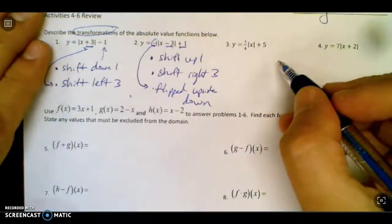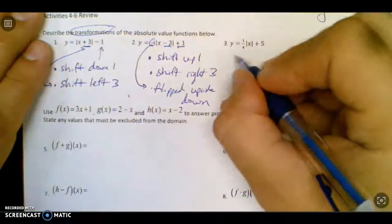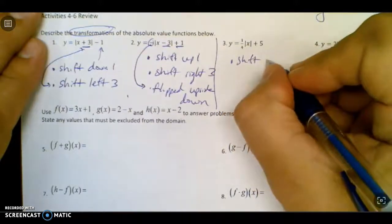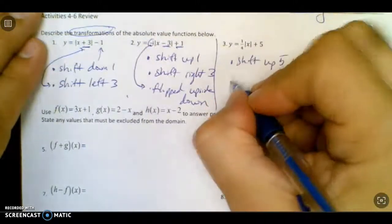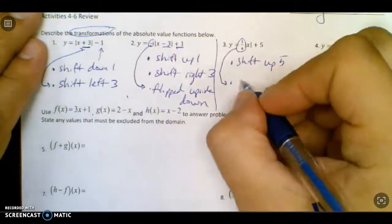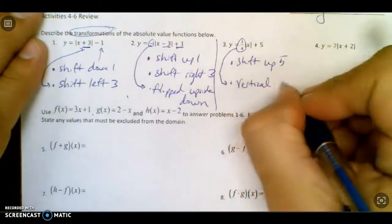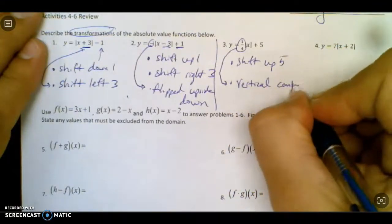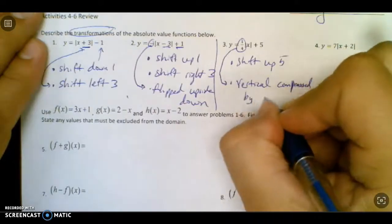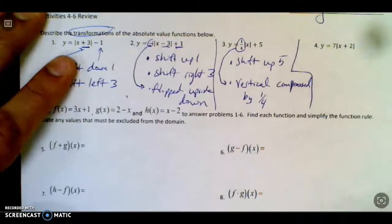And then similarly on the other ones, kind of the same deal going on. This 5 would be a shift up 5. And now we've got a little different thing, a 1/4 in front. It doesn't flip it upside down or anything, but it does affect the y values. It is a vertical compression by 1/4, which means every y value will be 1/4 as high as it used to be.